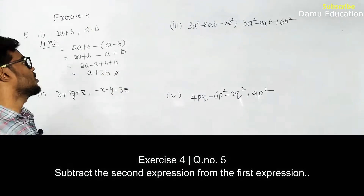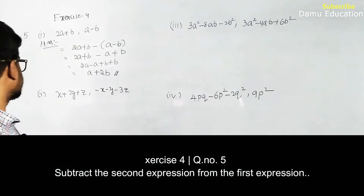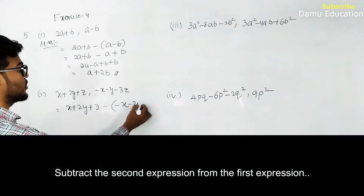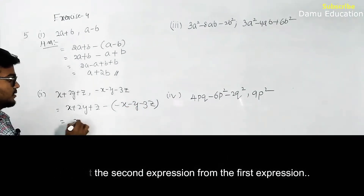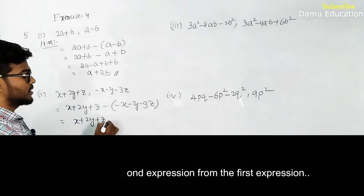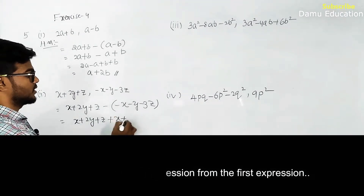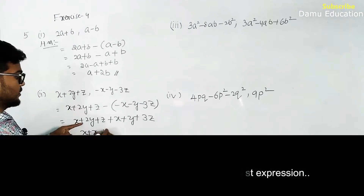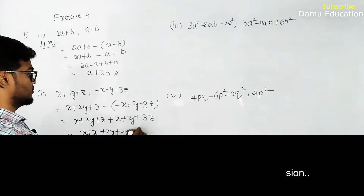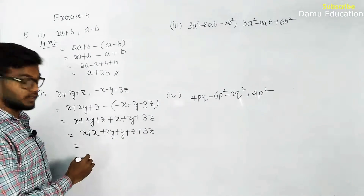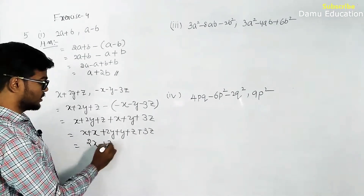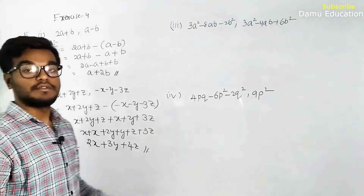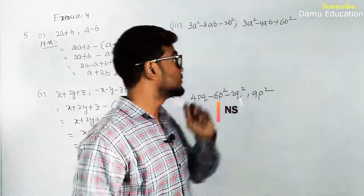Second question: x plus 2y plus z minus of (minus x minus y minus 3z). Minus into minus becomes plus x, plus y, plus 3z. So x plus x is 2x, 2y plus y is 3y, z plus 3z is 4z. The answer is 2x plus 3y plus 4z.